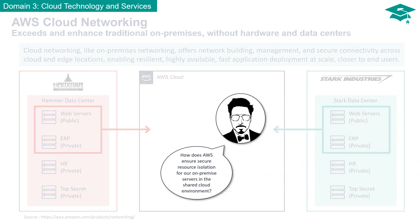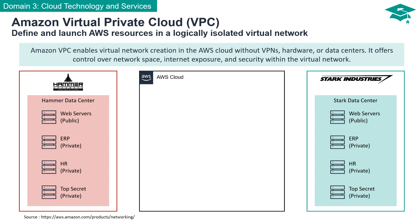How does AWS ensure secure resource isolation for on-premises servers in the shared cloud environment? Amazon VPC offers a robust solution for creating isolated virtual networks within the AWS Cloud, eliminating the need for VPNs, hardware, or data centers.